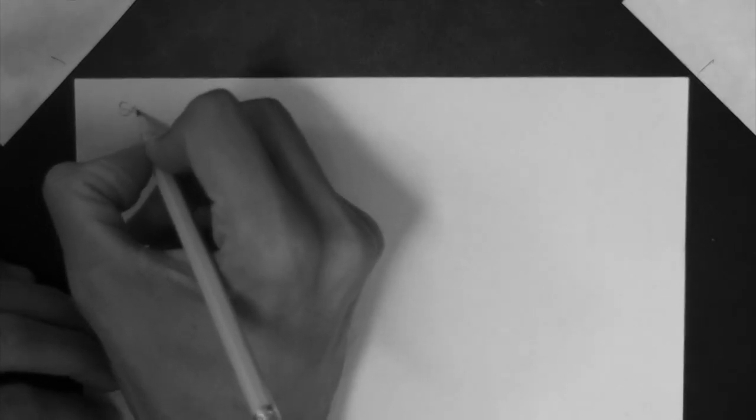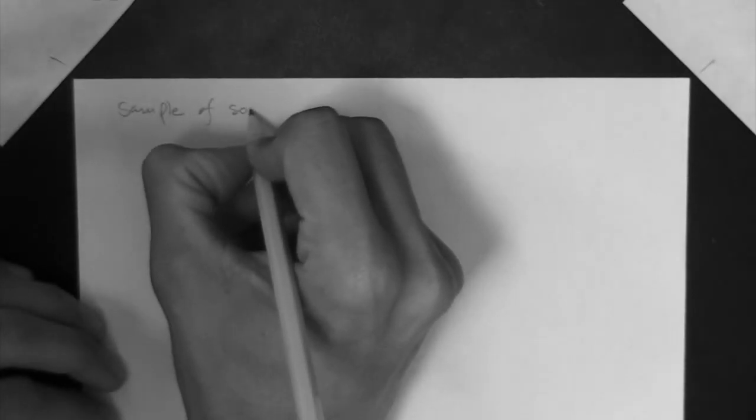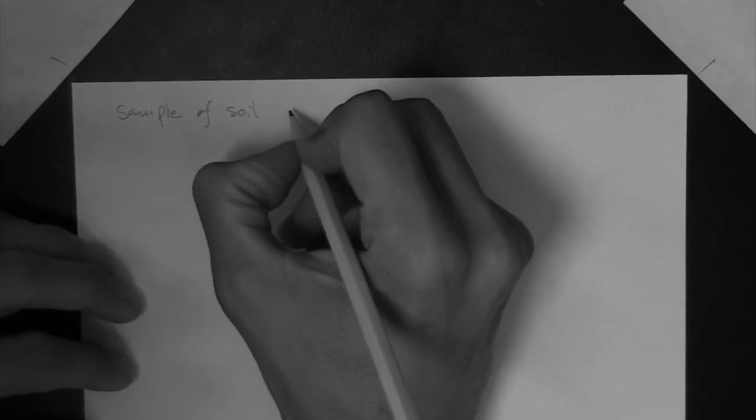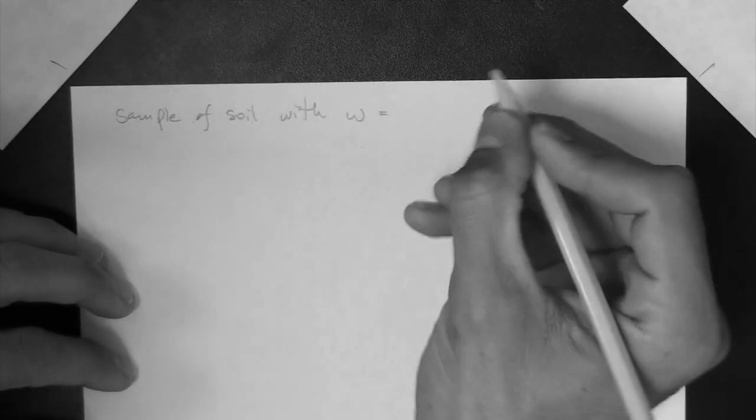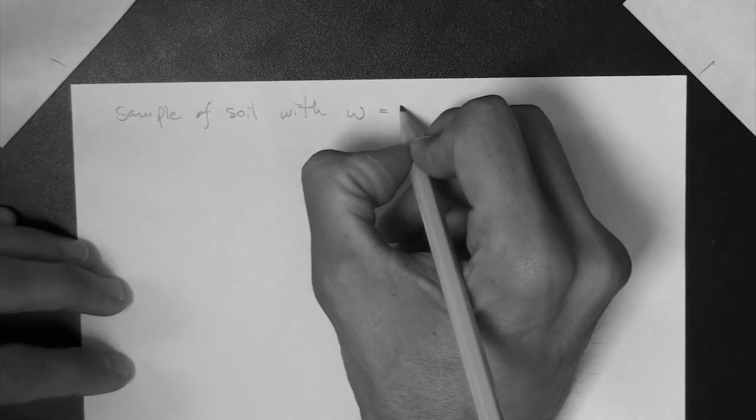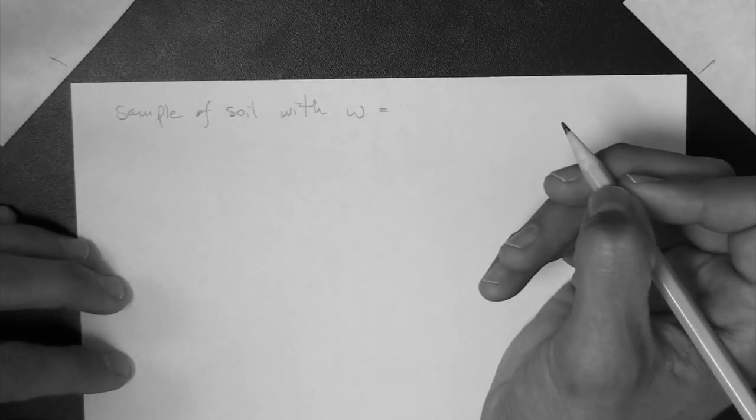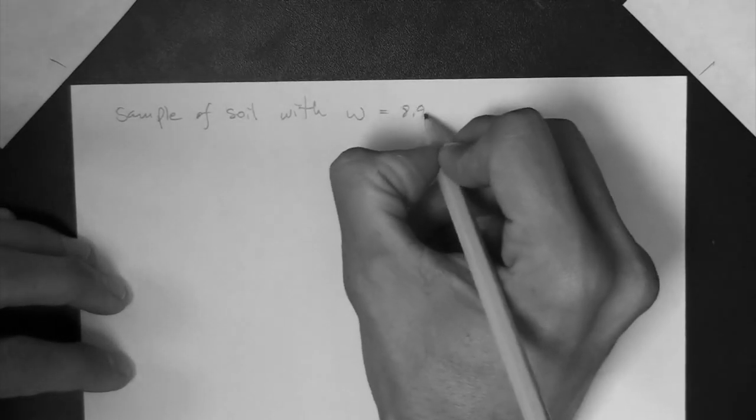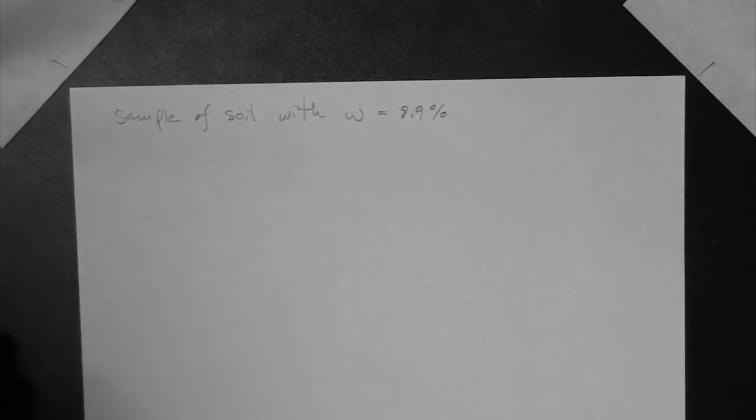Okay, here's another example of a phase relationship problem. We are given that there is a sample of soil that has a water content of, let's see what it is here... 8.9%, okay?